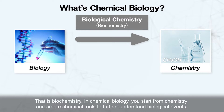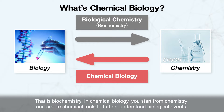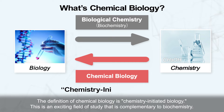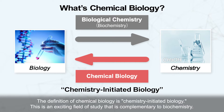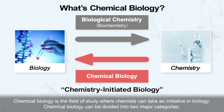In chemical biology, you start from chemistry and create chemical tools to further understand biological events. The definition of chemical biology is chemistry-initiated biology. This is an exciting field of study that is complementary to biochemistry — a field where chemists can take initiative in biology.